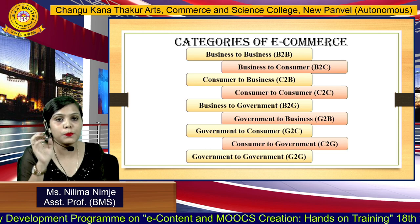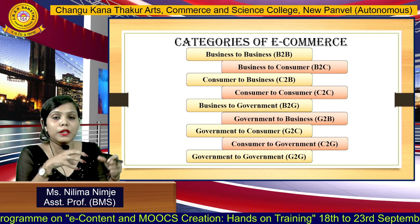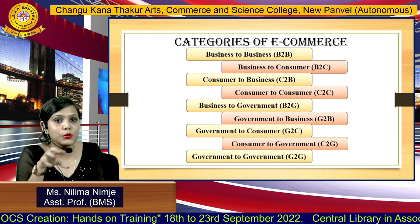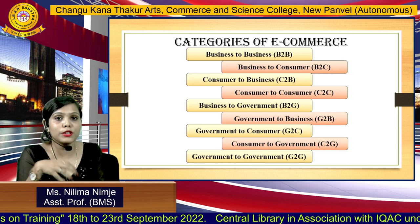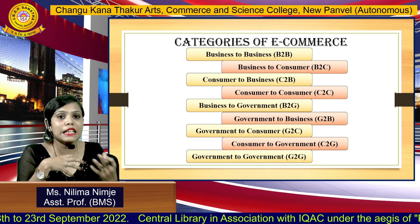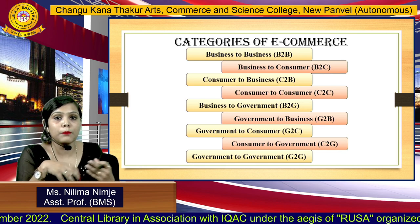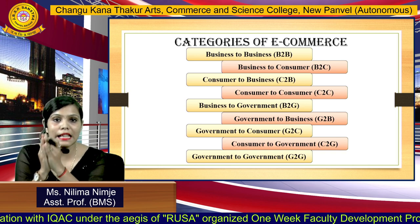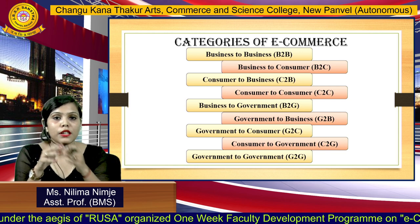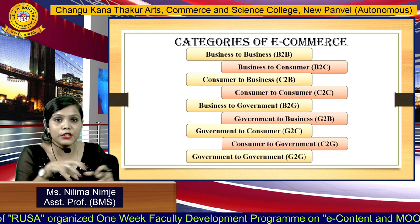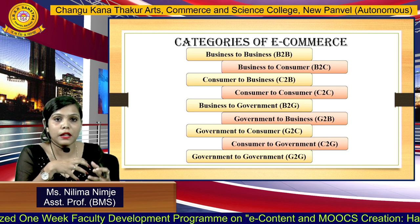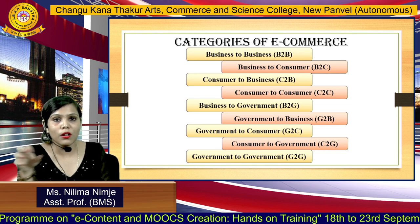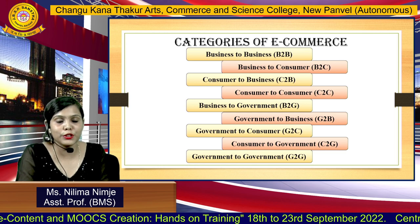The last model is G2G — Government to Government. Here the transaction occurs between two government agencies, departments, or organizations. The main goal of this model was to promote e-governance by improving communication, data sharing, and data access. An example is NEGIS — the Northeast Gang Information System — where the northeast states of India came together and formed a G2G model in which they transact among themselves electronically. That concludes our basic knowledge of e-commerce. Thank you and have a good day.